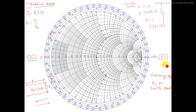If we know the impedance value for any given load, we want to find out the input impedance, V maximum, V minimum, how to plot the load impedance on the Smith chart, how to plot the corresponding admittance — load admittance — and how to find out the reflection coefficient, and what the Smith chart actually is.